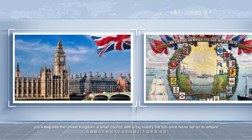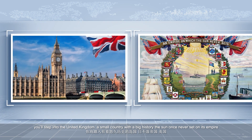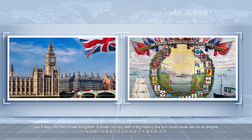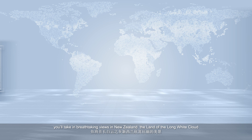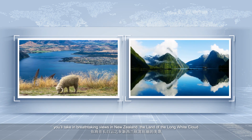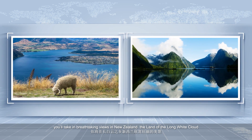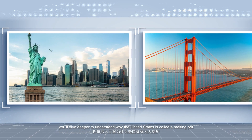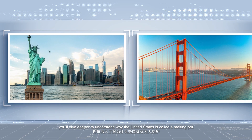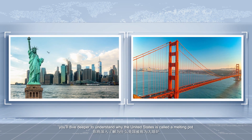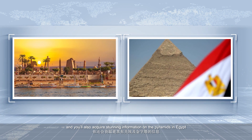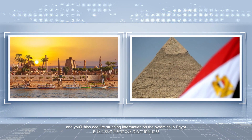You'll step into the United Kingdom, a small country with a big history — the sun once never set on its empire. You'll take breathtaking views in New Zealand, the land of the long white cloud. You'll dive deeper to understand why the United States is called a melting pot. And you'll also acquire stunning information on the pyramids in Egypt.